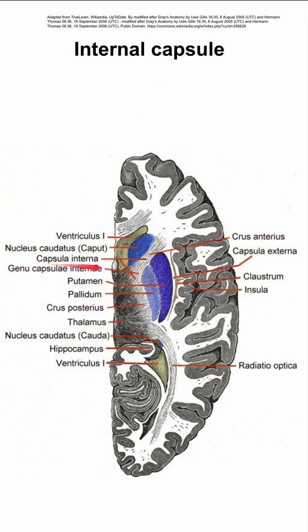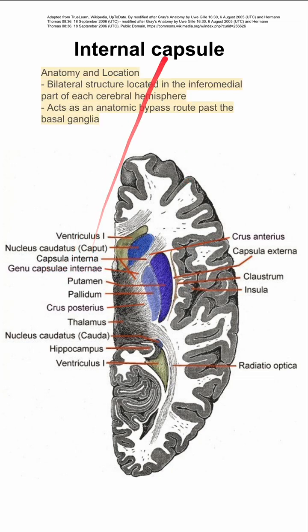Here's some notes on the internal capsule. This is a bilateral structure that's located in the inferomedial part of each cerebral hemisphere.